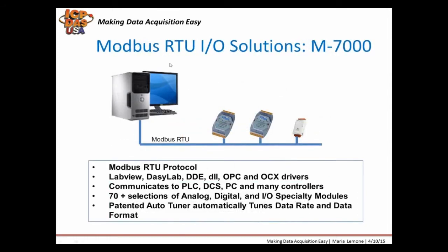Modbus RTU data acquisition modules, like our I-7000 modules, can communicate up to 4,000 feet and can communicate greater distances with RS-485 repeaters like the I-7510 that we provide. We provide a variety of DIN rail mountable Modbus RTU-based distributed IO modules in a wide variety of analog and digital configurations. They come with a patented auto-tuner, so the data rate and data format is automatically tuned to keep the communication robust. Dual watchdogs provide maximum uptime, because if there are any software or hardware problems in the field, the modules will automatically reset themselves. Configurable safe values allow the modules to start up in a desired on or off state.